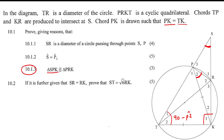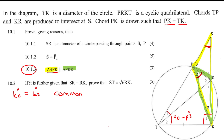Now prove that triangle SPK is similar to triangle PRK. Straight away you should see that they both share angle K2. So angle K2 equals K2 because it is common. Then we can immediately see that angle P2 is the same as angle S, and that's just because of what we proved already.